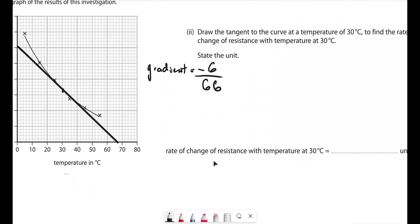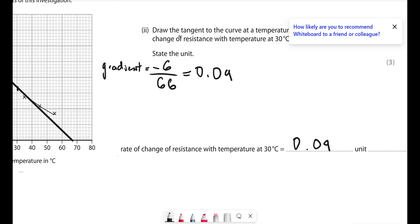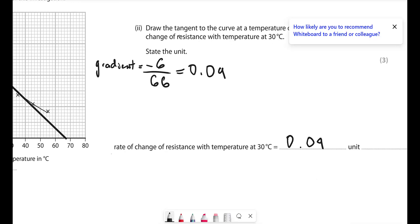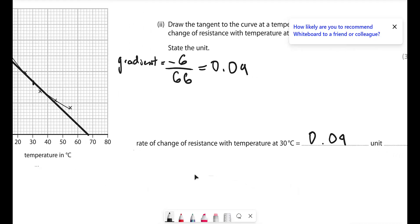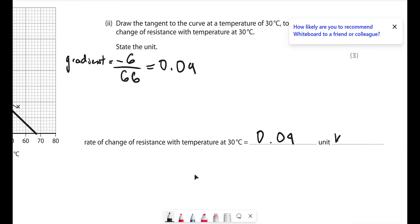Now that I've drawn the gradient, the gradient is equal to the change in Y divided by change in X, rise over run. So how much does our Y axis change? Well, it's going to go from 6 to 0, so our change will be negative and will be minus 6. Our change in the X axis of this entire tangent line is going to be from 0 to this point here, which is around 66. So 6 over 66. And if we put that into a calculator, we're going to get around 0.09. It's asking us for the unit as well. There's often a trick with these questions. It's in kilo ohms on the Y axis and in degree C on the X axis. So the unit will be kilo ohms per degree Celsius.